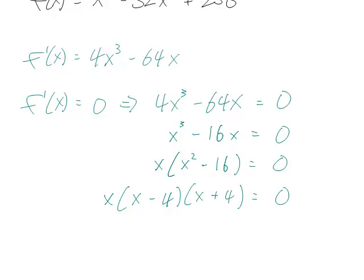So it factors to x minus 4 and x plus 4. There are three factors. The first one, x, tells us that one root, one zero of this polynomial is 0. And the other two factors tell us that the other zeros are 4 and minus 4. So the critical points are x equals 0, 4, and minus 4.